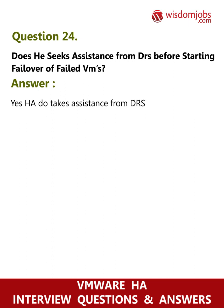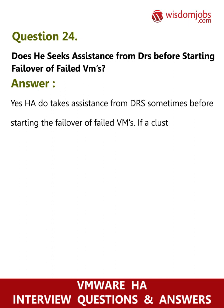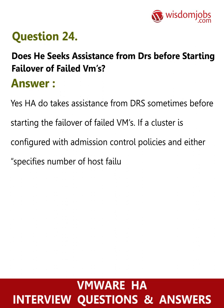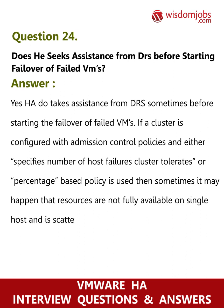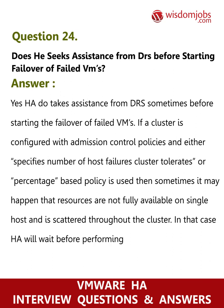Question 24: Does HA seek assistance from DRS before starting failover of failed VMs? Answer: Yes, HA takes assistance from DRS sometimes before starting the failover of failed VMs. If a cluster is configured with admission control policies — either specifying number of host failures the cluster tolerates or a percentage-based policy — it may happen that resources are not fully available on a single host and are scattered throughout the cluster. In that case, HA will wait before performing failover and ask DRS to defragment the resources.